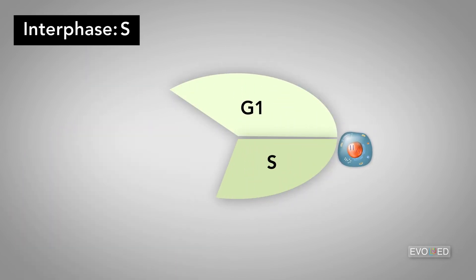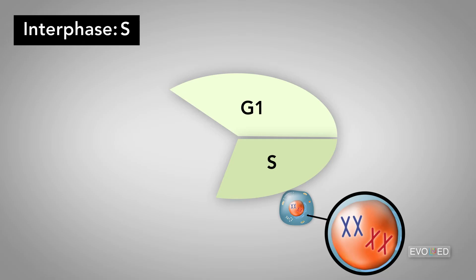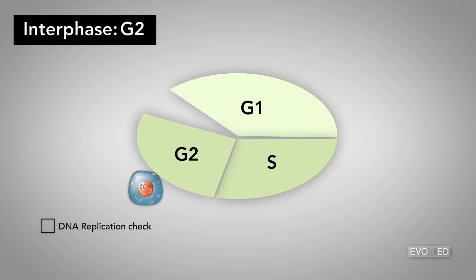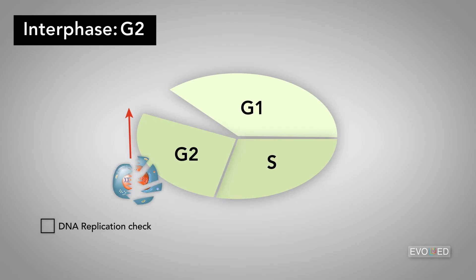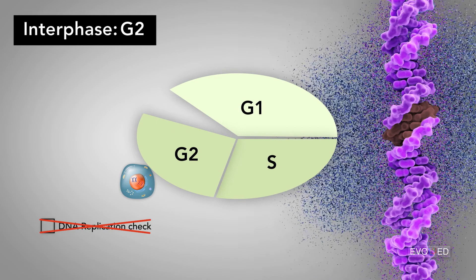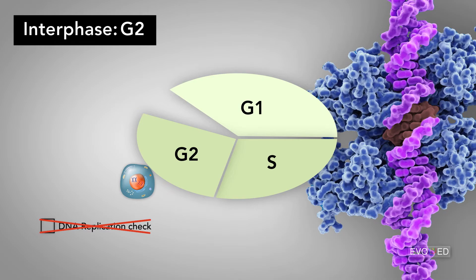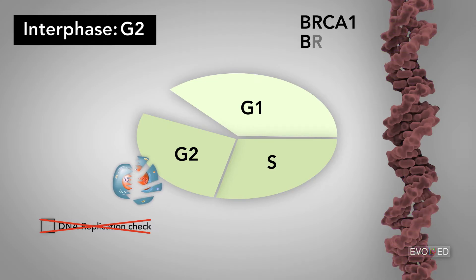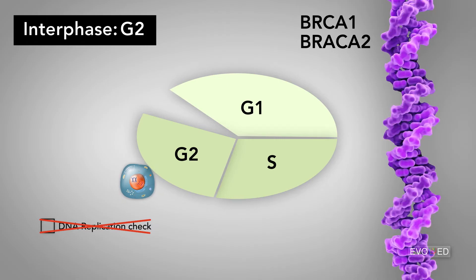After the G1 checkpoint is passed, the S phase or synthesis phase begins, and DNA is replicated into identical paired chromatids. After the S phase comes the G2 phase and another checkpoint where the cell does another self-assessment. Here, the cell can either continue preparing for mitosis or it will initiate apoptosis. At this checkpoint, the P53 protein and the BRCA proteins come into play. If DNA replication was not accurate enough, the P53 protein can attempt to initiate DNA repair, and if that repair isn't possible or successful, P53 can initiate apoptosis. BRCA1 and BRCA2 also play a role in DNA repair if damage has occurred.